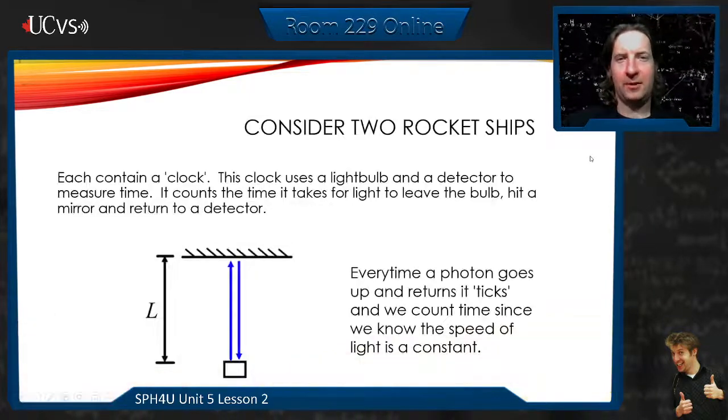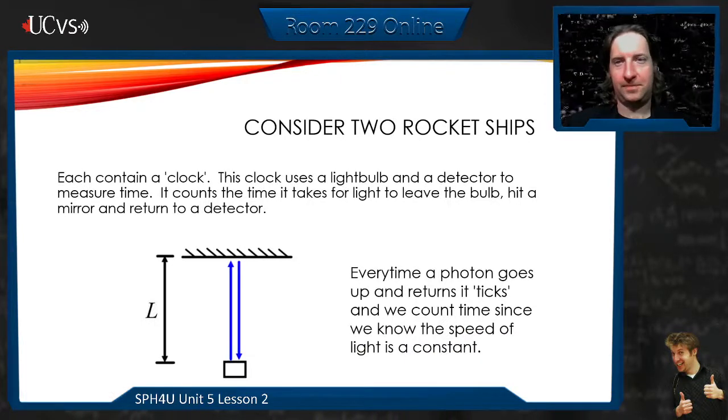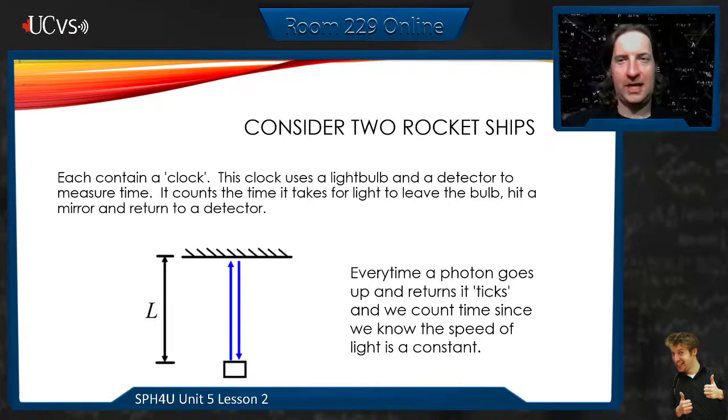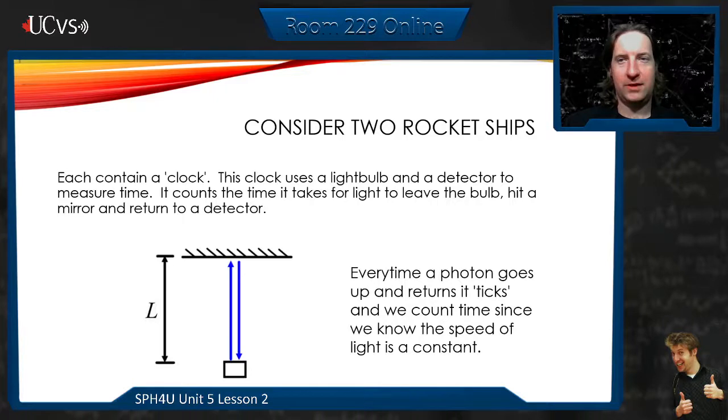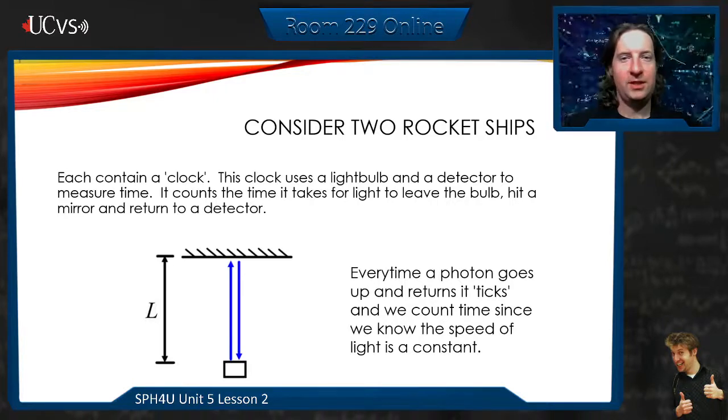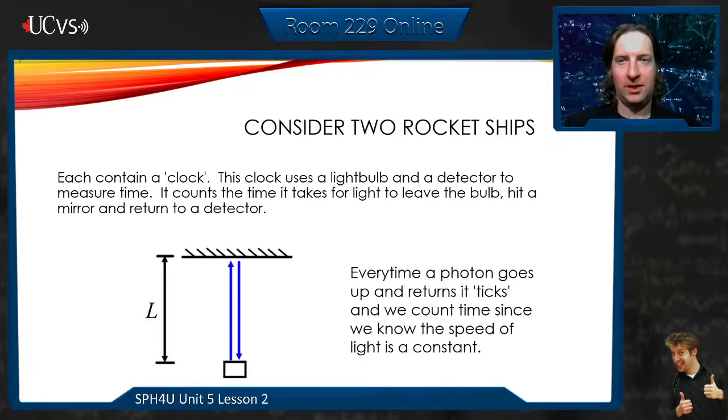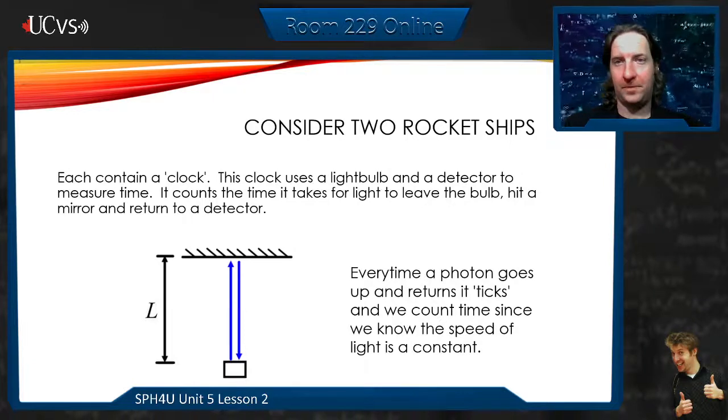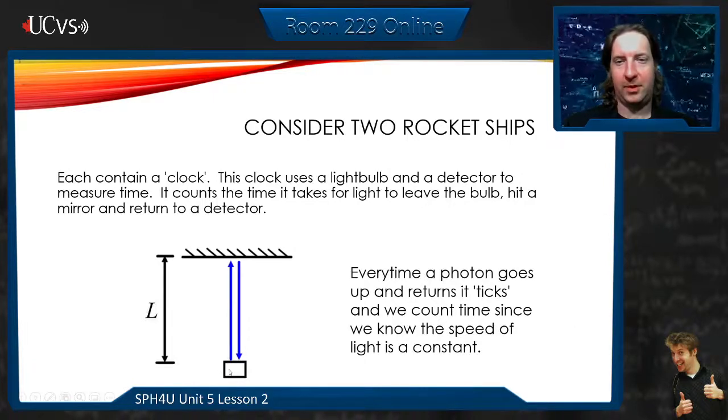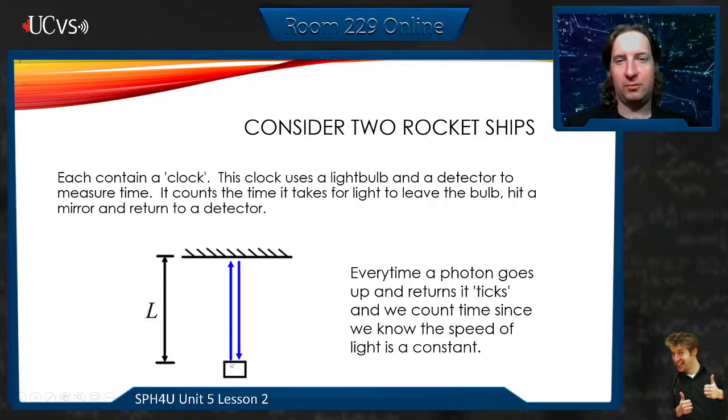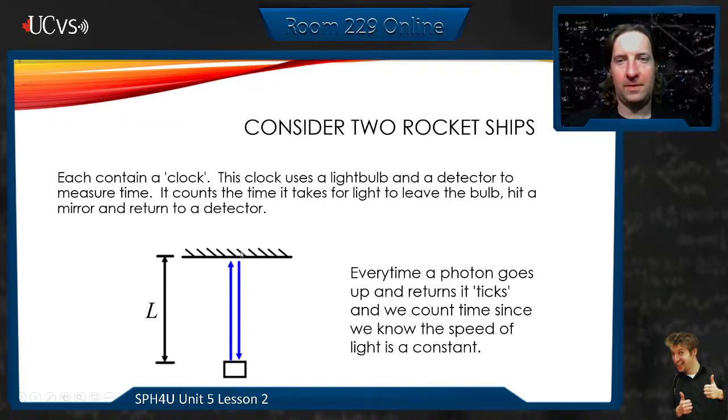So let's think now about those two rocket ships. Now we're going to use the flashlights again, but we're going to use those flashlights now, instead of pointing them at the other rockets, we're going to use them internally as a clock. We're going to take our flashlight, I see a light bulb here at the bottom, and it's going to reflect off of some mirror and bounce back down to a detector.